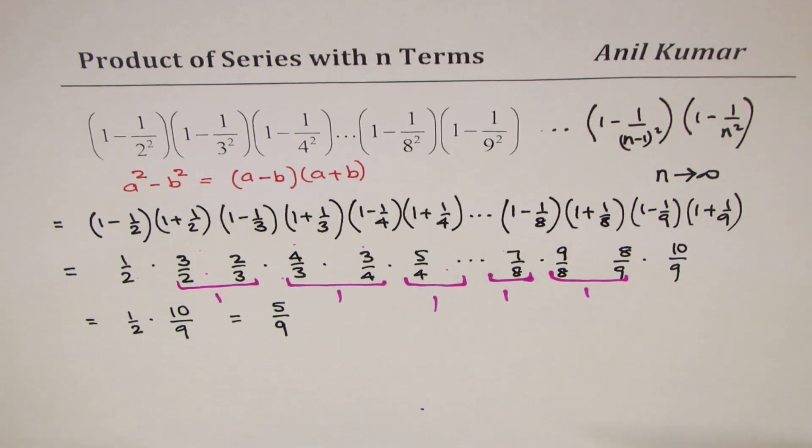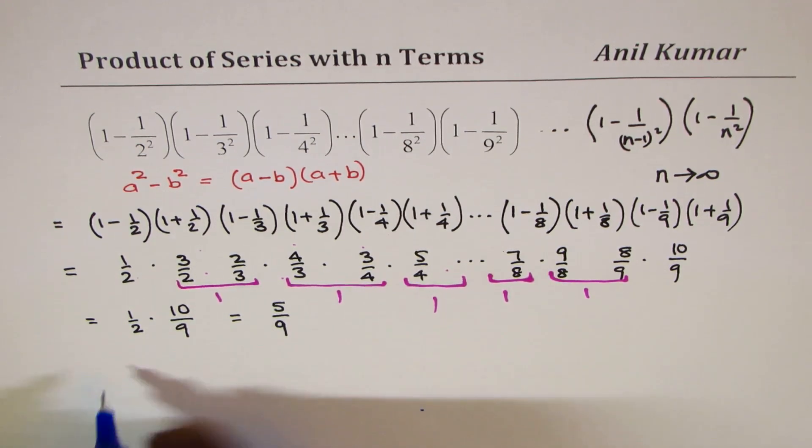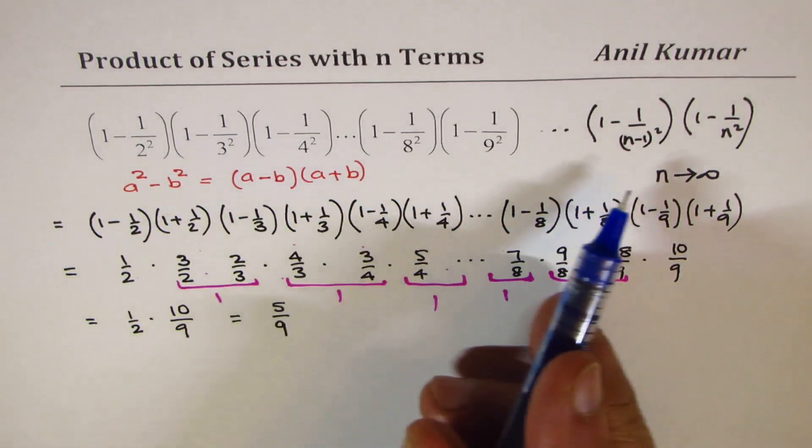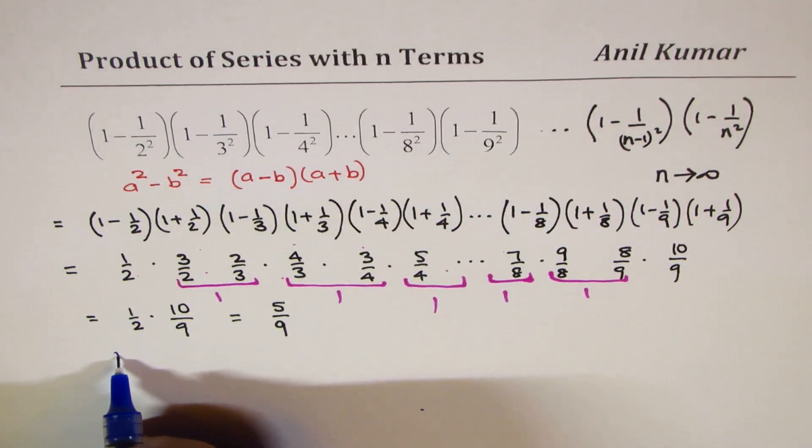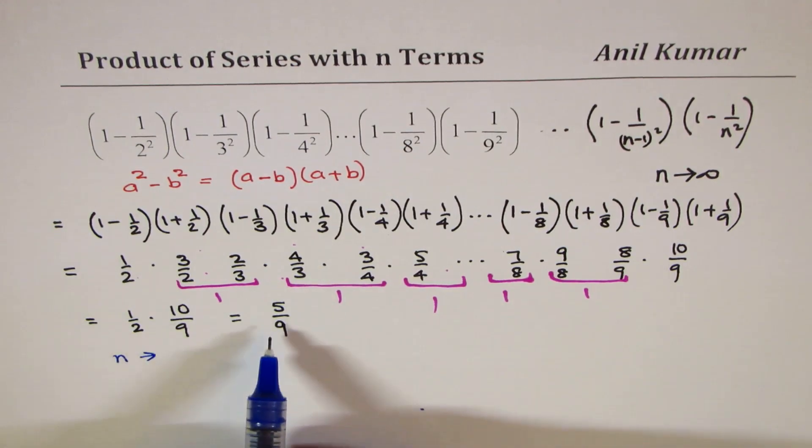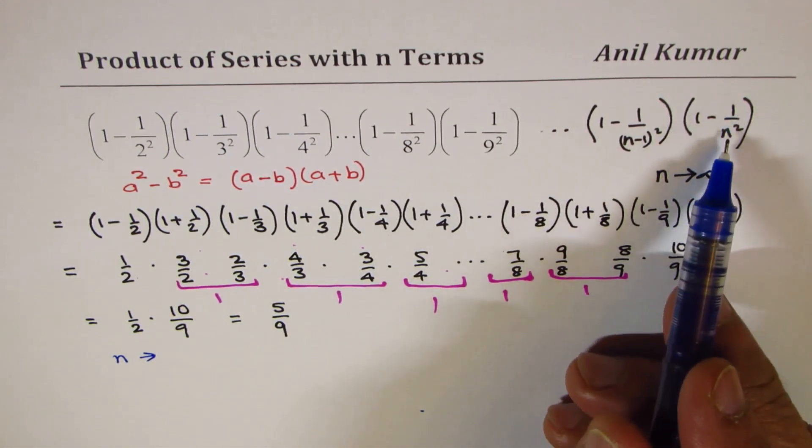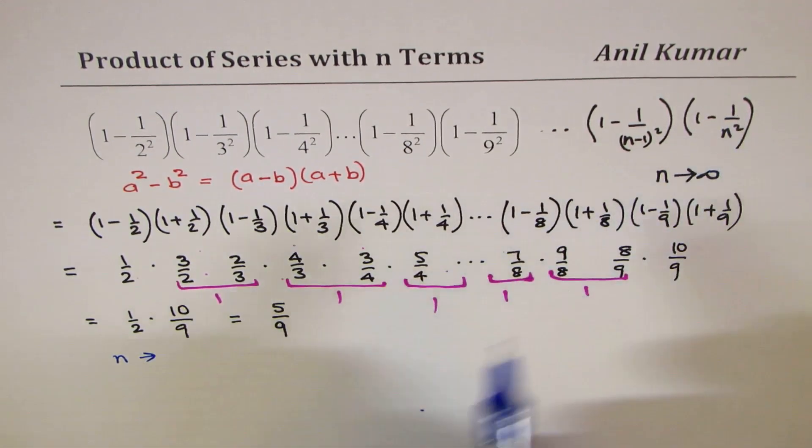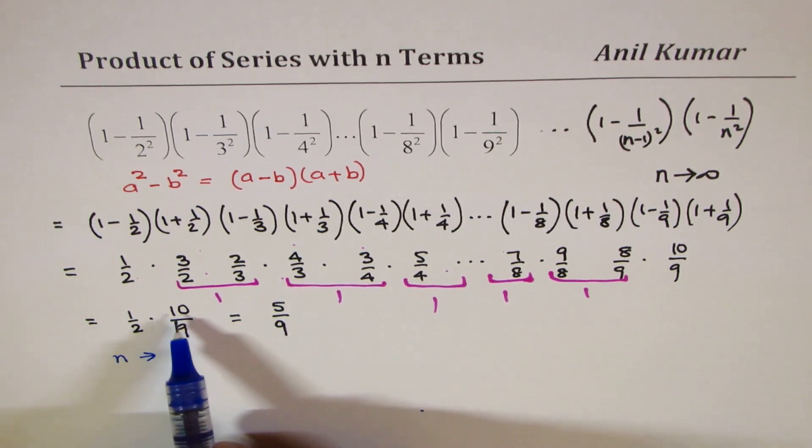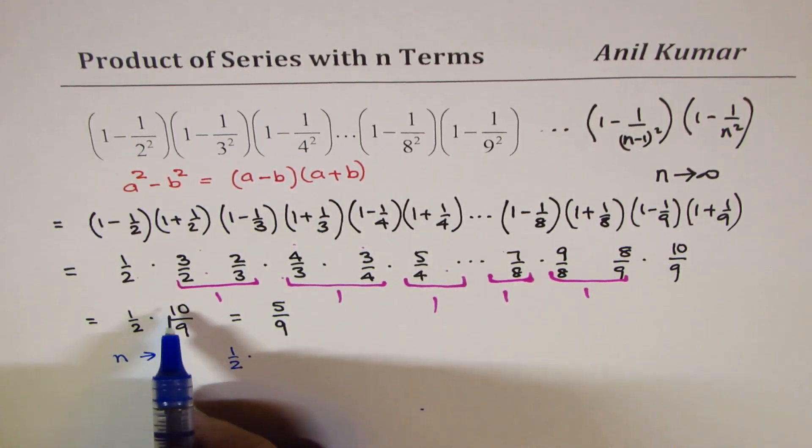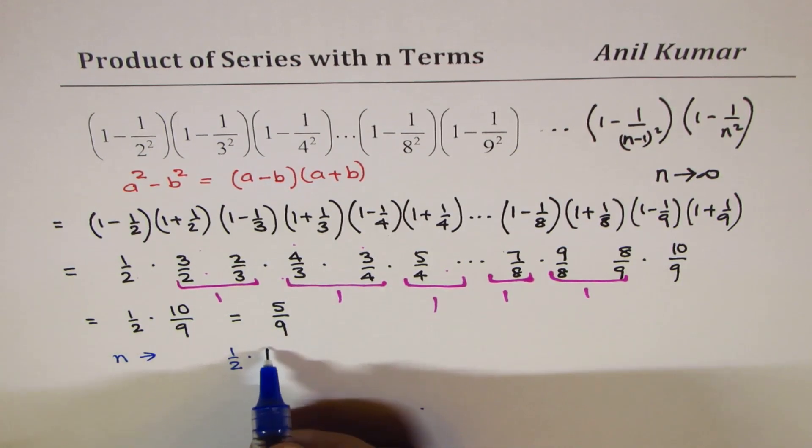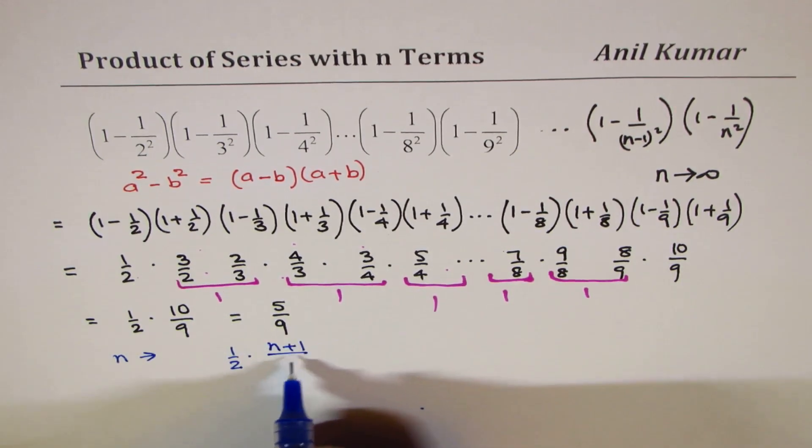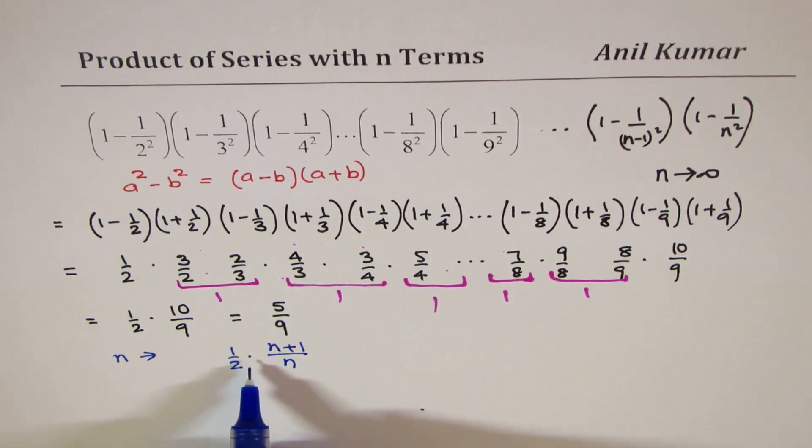Now, let us look into the option where if we extend it to n numbers. So, when extend it to n numbers, then what happens? In that case, the last number is 1 over n squared. So, instead of 9, we will get half of, instead of 10 over 9, we will get n plus 1 over n. We will get half of n plus 1 over n. So, that becomes the final result when we are considering up to n.